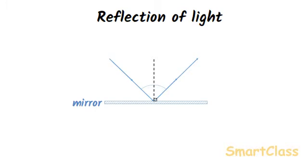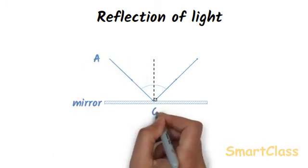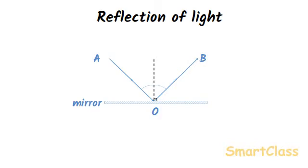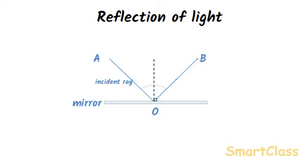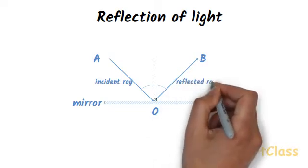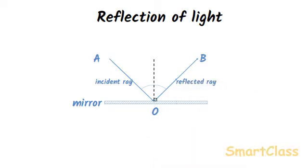When a ray of light A falls on the mirror at point O, it is sent back by the mirror in another direction B, and in this way the mirror reflects the light. The light ray falling on the mirror is called the incident ray, and the ray of light given out by the mirror is called the reflected ray of light. It is not only a mirror which reflects light — most objects reflect light which falls on them.